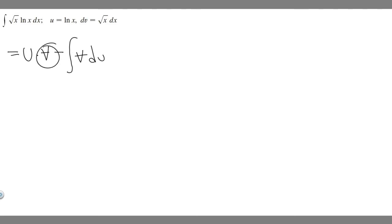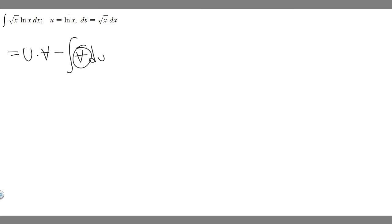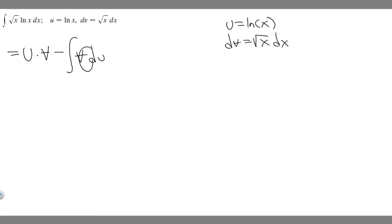Notice how we're given u and dv, but we need du and v in order to solve this. So let's write down what we're given: u is the ln of x, and dv is equal to the square root of x dx. What we need to do now is find du and v.